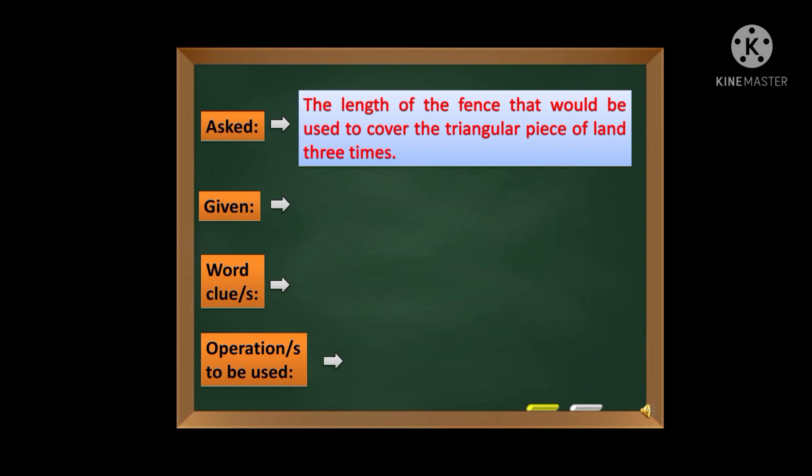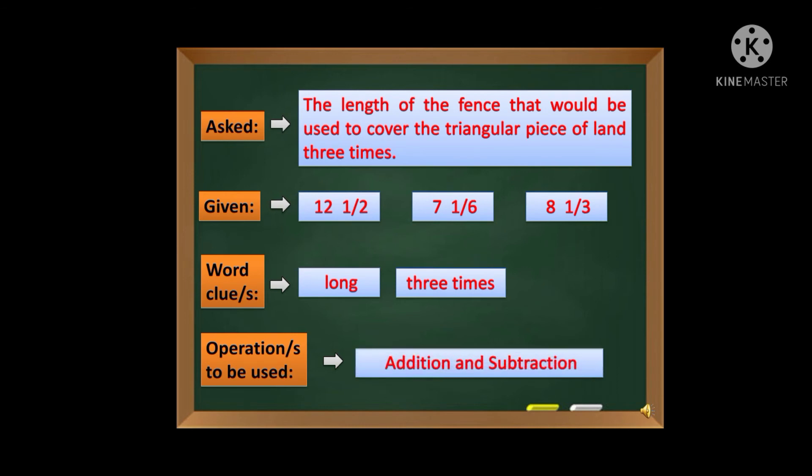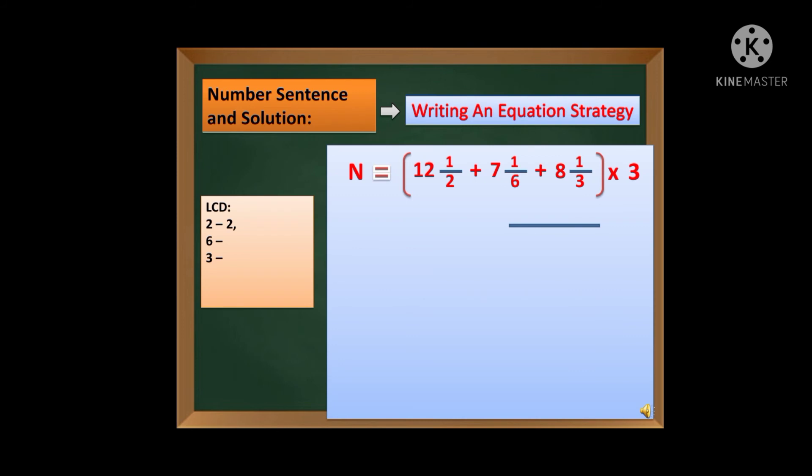Next, ano pa ang mga given facts? We have 12 and one-half, we have 7 and one-sixth, and 8 and one-third meters. At ang word clue natin, we have 'long' and '3 times.' And operations naman na gagamitin natin: addition and subtraction. Idagdag din natin dyan si multiplication.